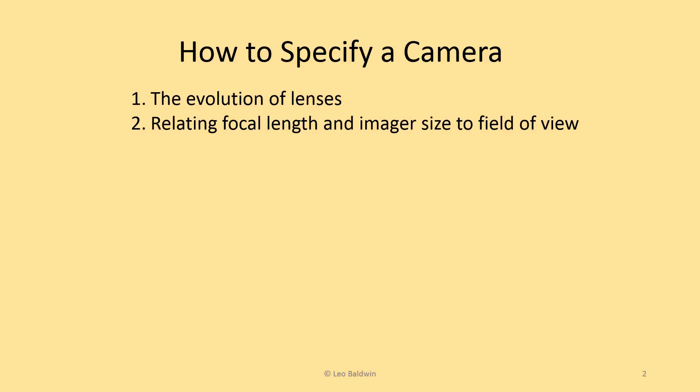We'll relate the focal length to the imager size and the field of view — for anyone who wants to specify cameras, that's exactly it: what focal length will give me the field of view, or vice versa. We'll talk about spot size, and that's important. A lot of the lenses out there were designed for old cameras with really big pixels. Now we have small pixel cameras, and if you put the wrong lens on, it's pretty terrible.